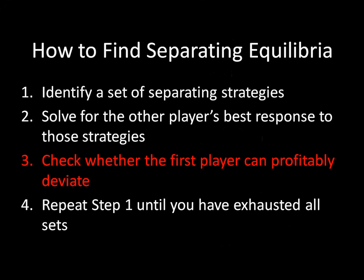Now we have to move on to Step 3. We have to check whether the first player can profitably deviate. This is where we get into more complicated strategic thinking, where Player 1 can abuse the fact that Player 2 does not directly observe whether Player 1 is a strong or weak type given that hide strategy. So it needs to be the case that Player 1 doesn't want to try to do something tricky and maybe try to bluff something else. And if that's the case, then we don't have an equilibrium. If it's the case that Player 1 doesn't want to try to cheat or lie or bluff, then we have an equilibrium.